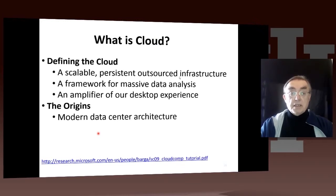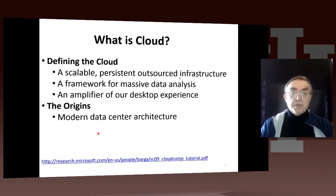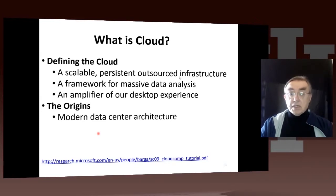Here's another simple definition of a cloud: scalable, persistent, outsourced infrastructure — words we've seen before. Maybe 'outsourced' is a little different, but we know what that means. For a public cloud, you're outsourcing the computing from your data center to Amazon's data center. They support huge big data analysis. We've already discussed how they amplify our desktop experience, and clouds are a data center architecture that produces the world's biggest data centers.